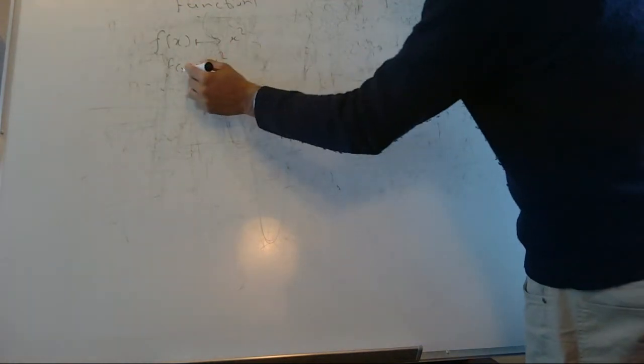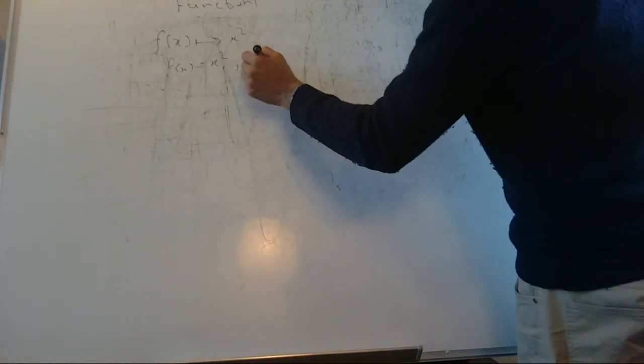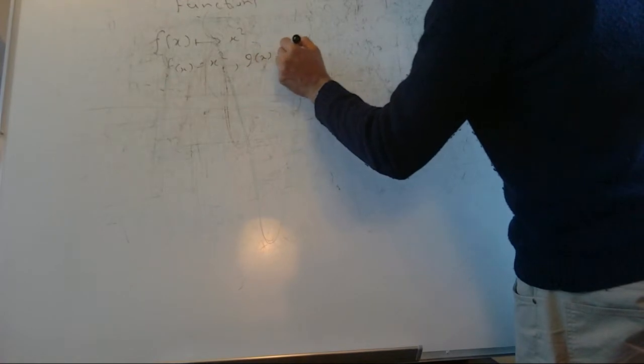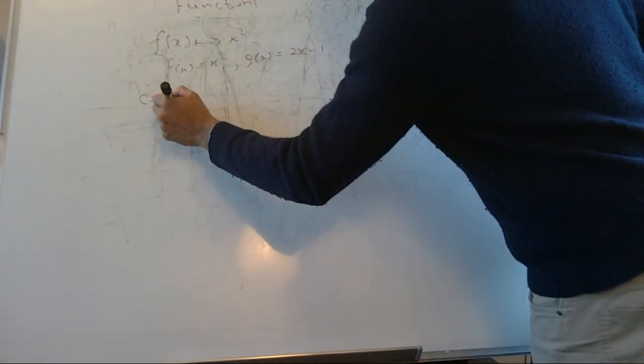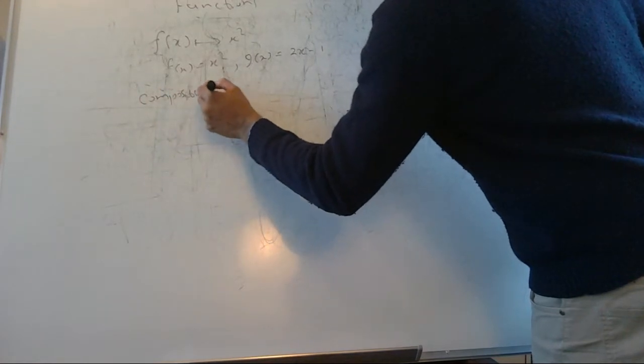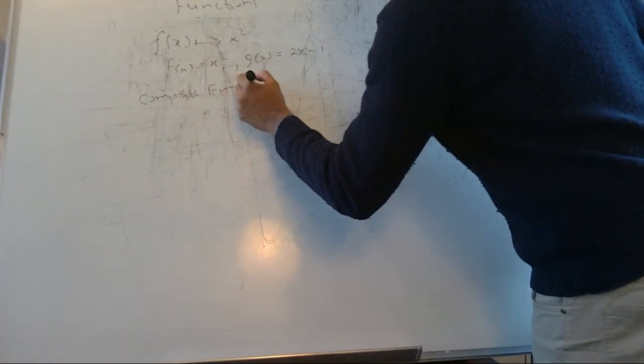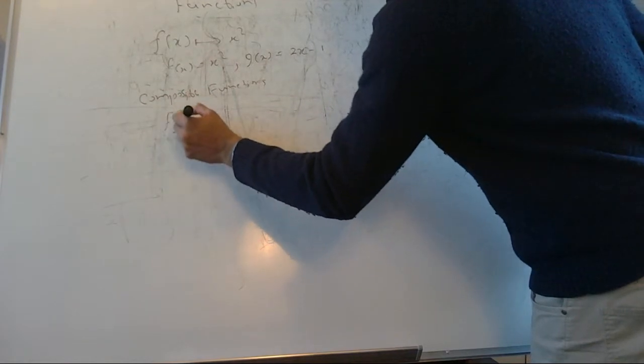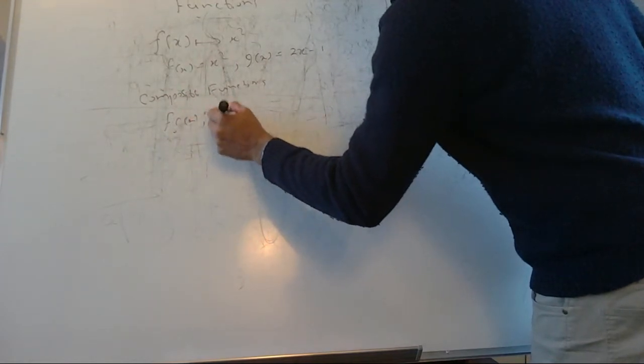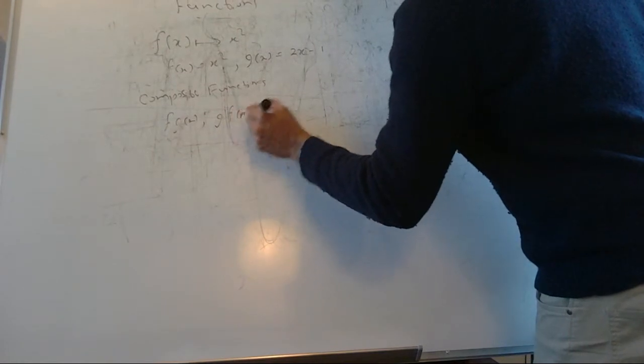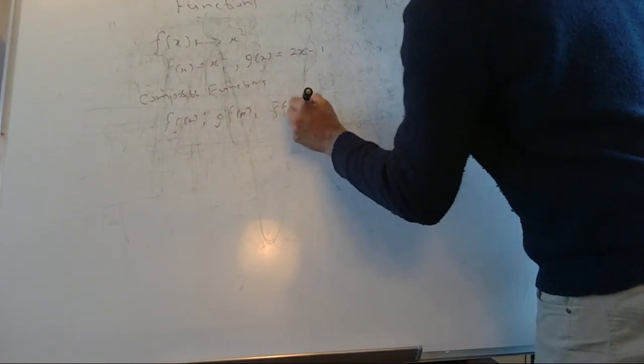Let's say we have a function f of x equal to x squared and another function g of x equals 2x minus 1. Now we can get the composite function. You can have f of g of x, g of f of x, or even f of f of x — any combination you like.